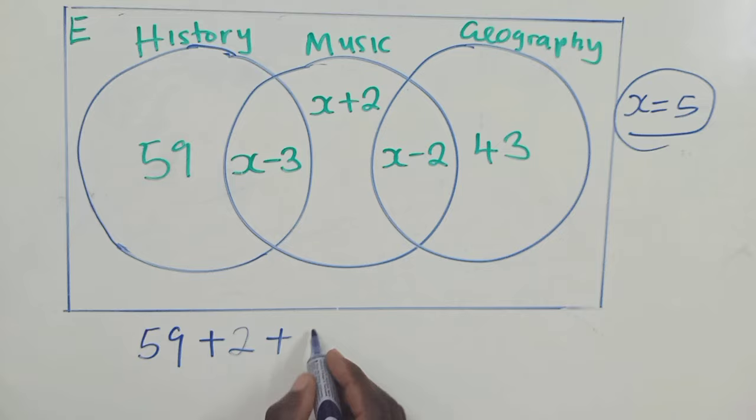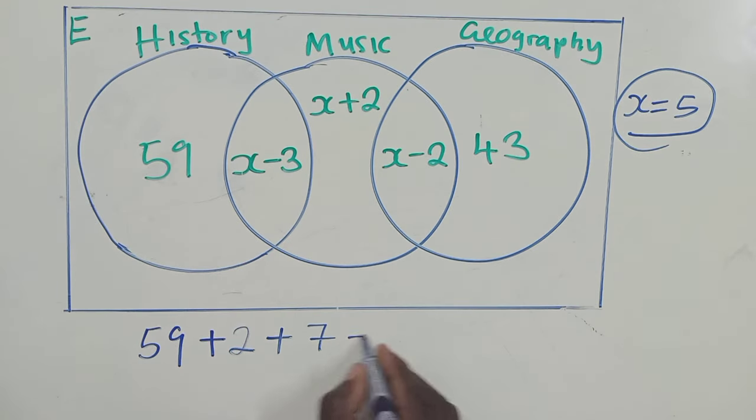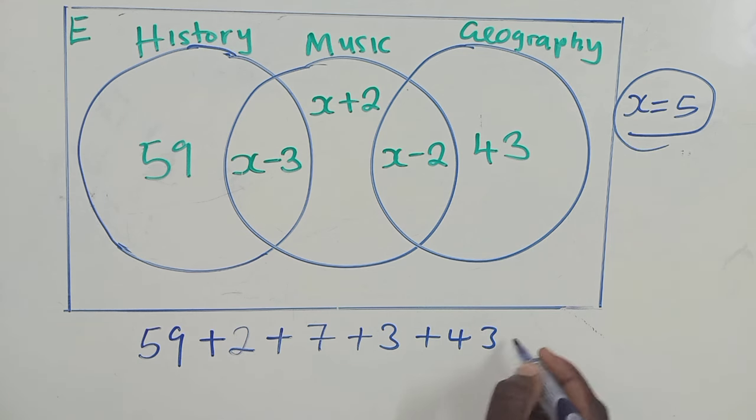Plus, we put 5 here, we have a 7. We put 5 here, 5 minus 2, we have a 3, plus 43. So we just add. When you add, what are we getting? We are getting, let me just confirm, I think 114. So 59 plus 2 plus 7 plus 3 plus 43. We are getting 114. So this is 114 right here.